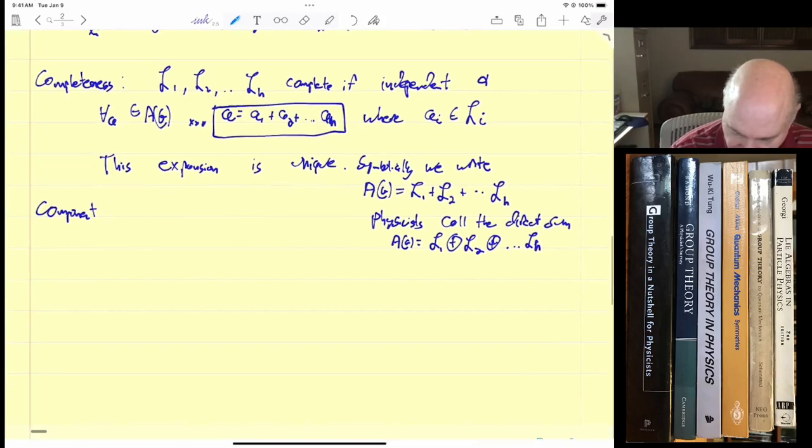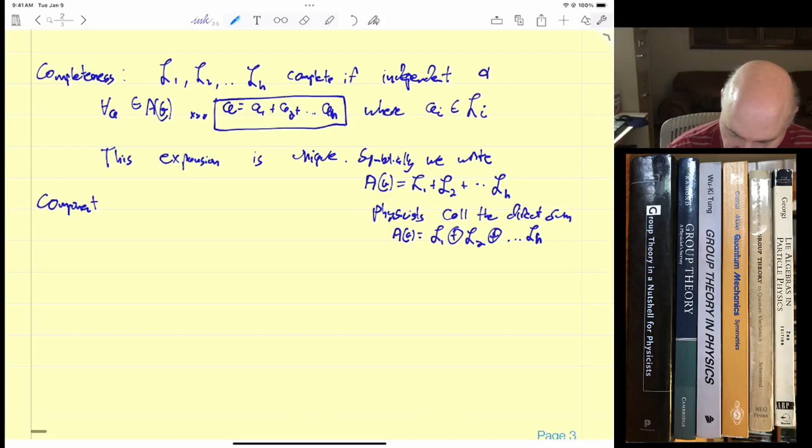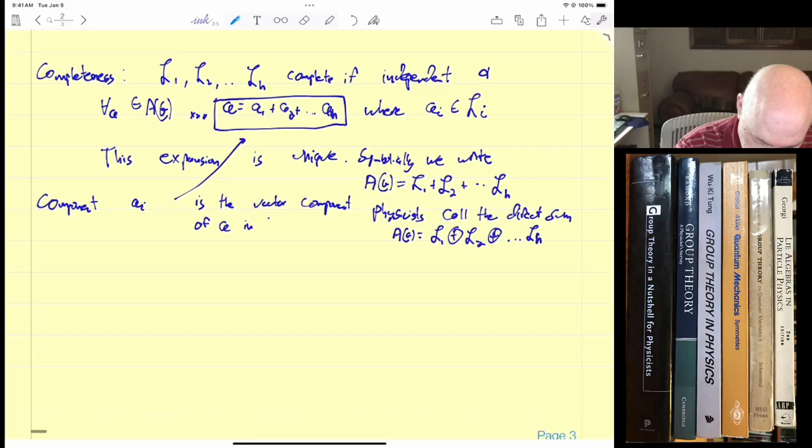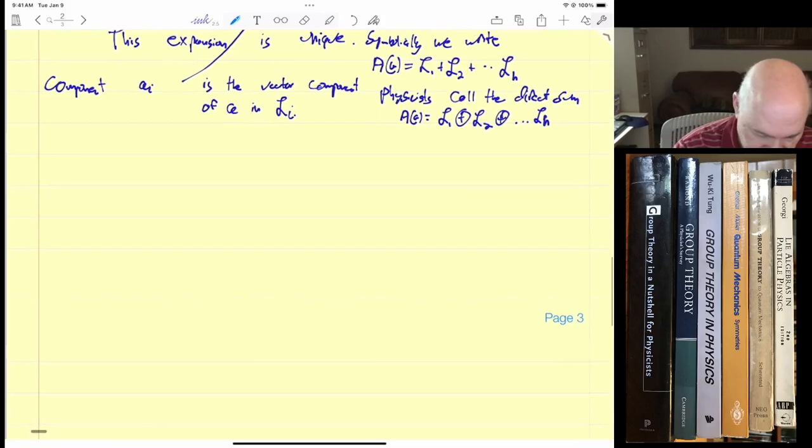So Shinested, in her notation, the book very rarely puts the circles around the pluses or the times. Physicists do, though. So AI in this expansion, AI is the vector component of A in LI, actually.